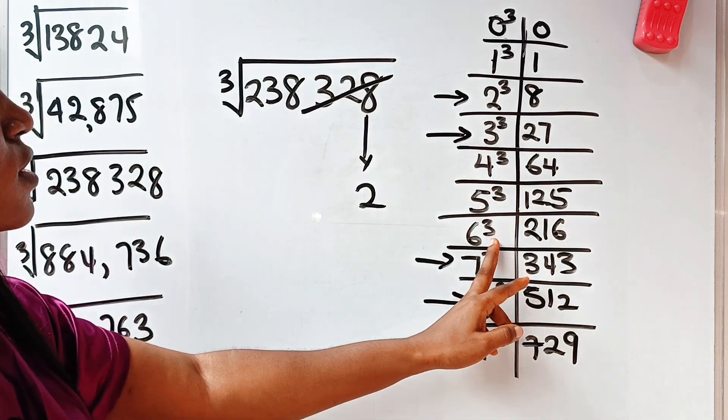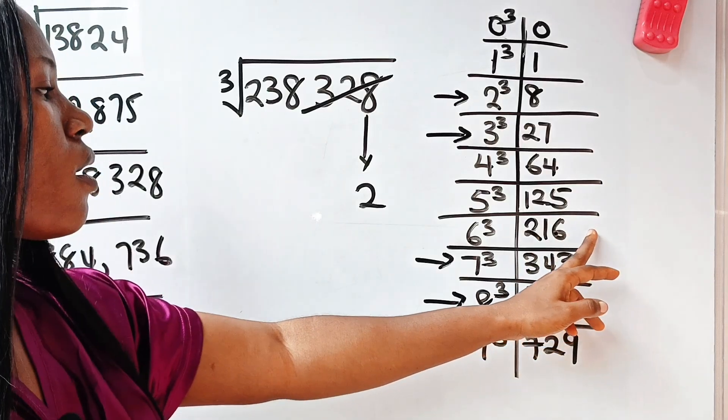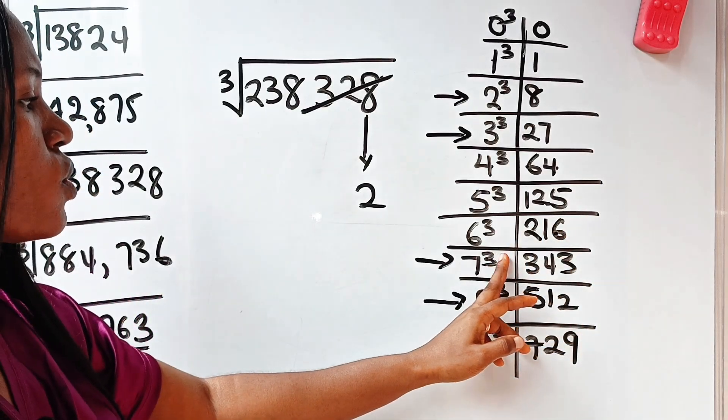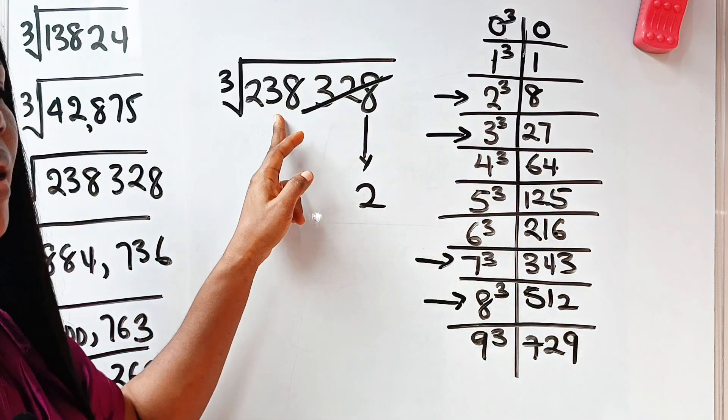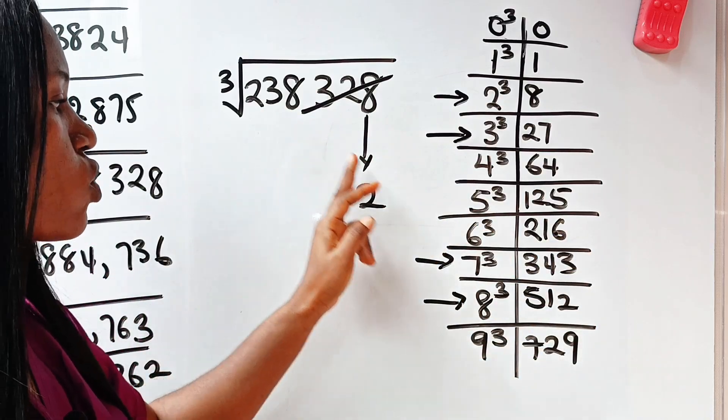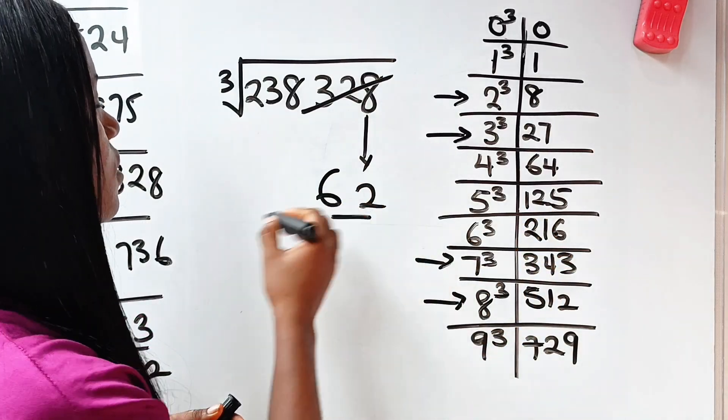6. Yes, because 6 cubed will give you 216. Alright? But 7 cubed will give you 343, which is larger than 238. So we are going to go for what? 6, which is 216. So the answer is 62. Very easy. Right?